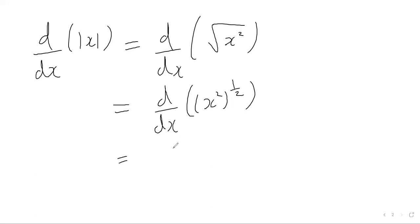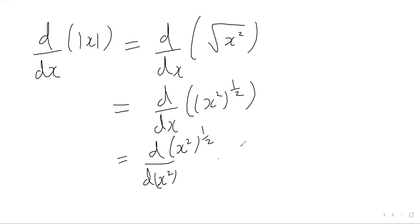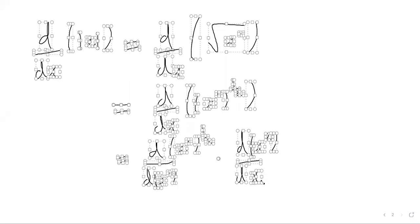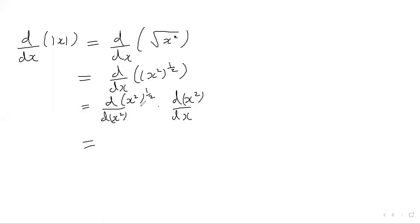So we're differentiating the x squared function within the square root function. Using the chain rule formula, we differentiate x squared to the power of a half with respect to x squared, then multiply that by the derivative of x squared with respect to x. When we differentiate the first function, we bring the power of a half to the front, keep x squared inside, and take away one from the power — differentiating that variable to the power of a half with respect to that variable.